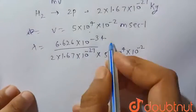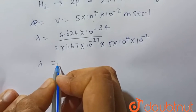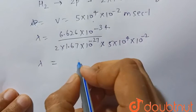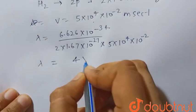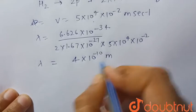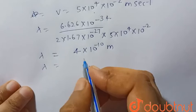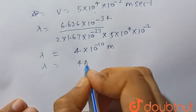After calculating, we will get its value equal to 4 × 10^-10 meter. We know that 10^-10 meter is angstrom, so it will be 4 angstrom.